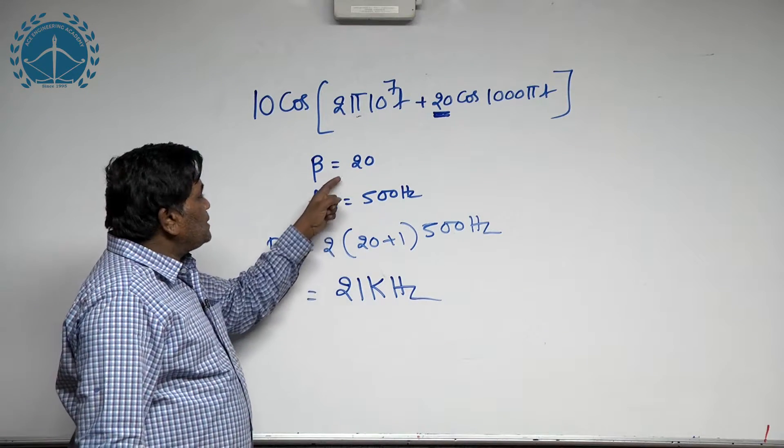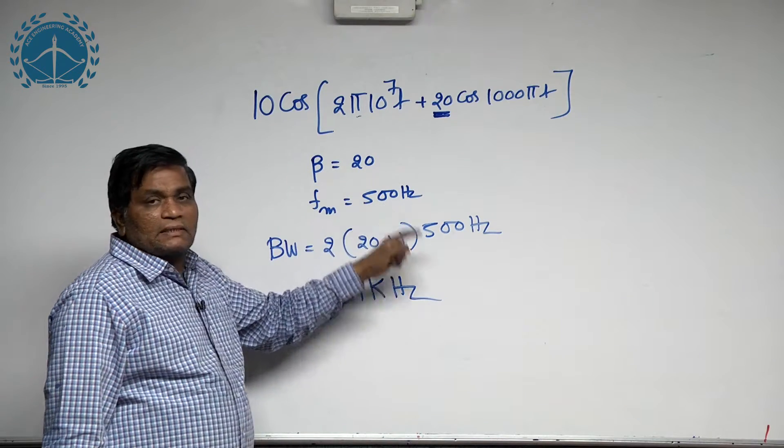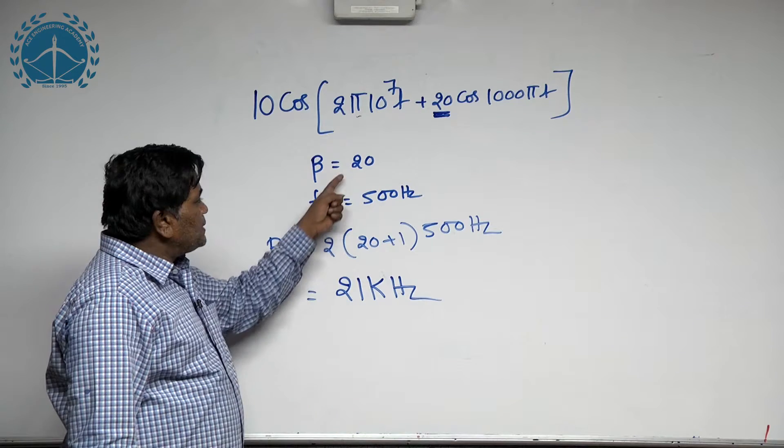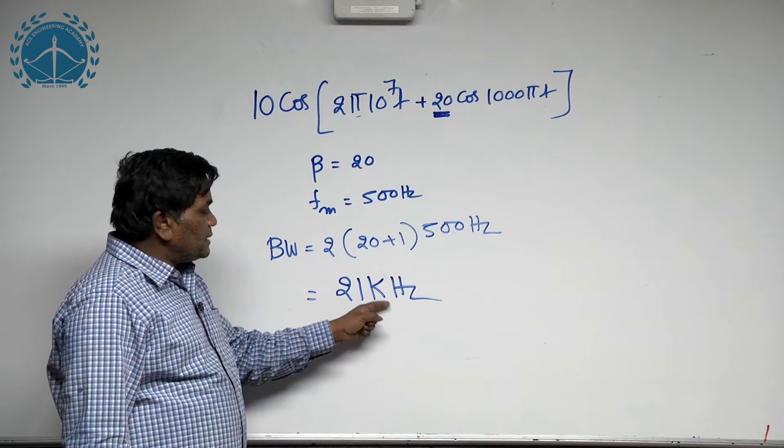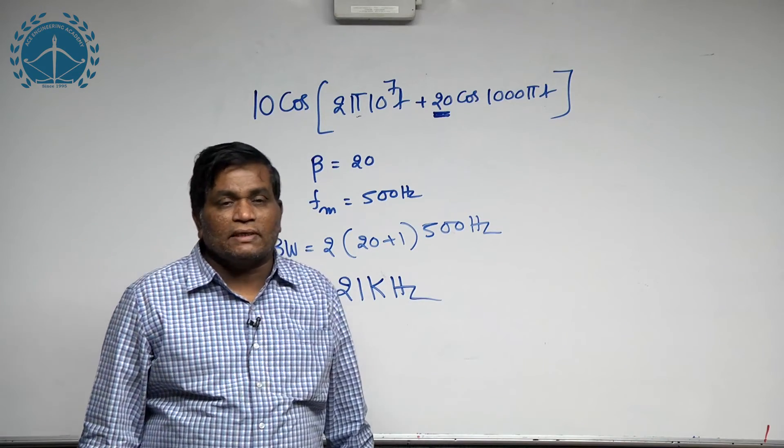In the question, the modulation index is given as 20 and the message frequency is 500 hertz. If you substitute the values, the bandwidth answer is 21 kilohertz. So the answer is 21 kilohertz.